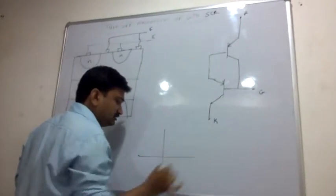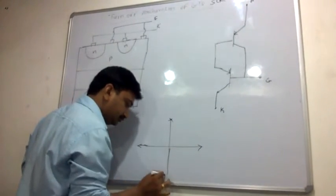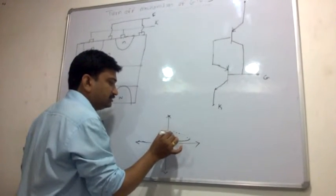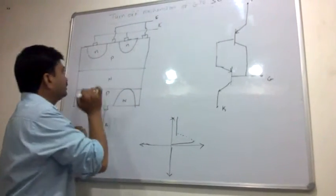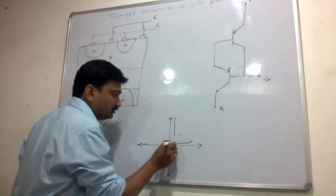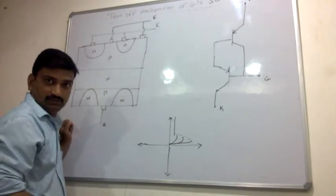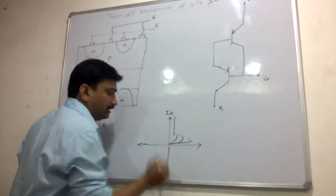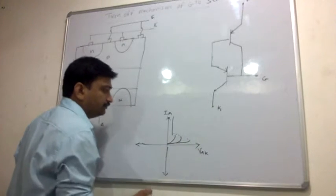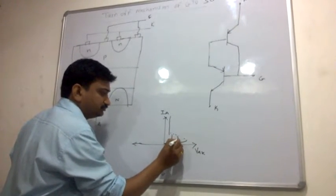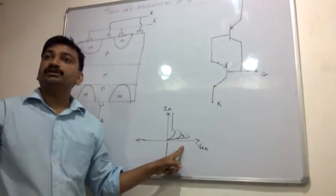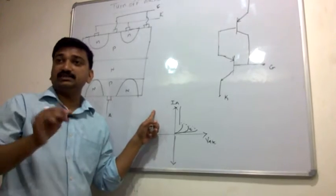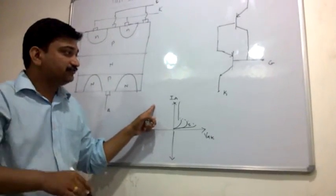The on-state characteristics, meaning the VI characteristics of the GTO, are the same as that of a SCR. In the forward state there is a power blocking state, a transition state, and a turn-on state. As the gate voltage reduces, we get the same characteristics as the SCR — this is the anode-to-cathode voltage, and this is the gate voltage. So the same characteristics are observed in the Gate Turn Off SCR.